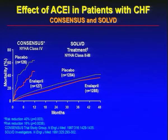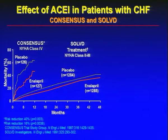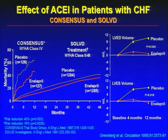The CONSENSUS trial showed us that in NYHA class 4, and the SOLVD trial showed us that in NYHA class 2 and 3, there is a reduction of mortality by the use of enalapril. This reduction was about 40% in CONSENSUS and about 16% in the SOLVD trial, and this was due to prevention of remodeling. As you see on the right side, both the left ventricular end diastolic volumes and left ventricular end systolic volumes were reduced.